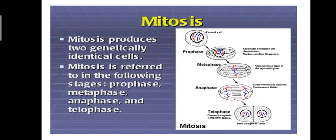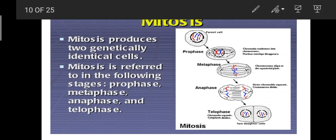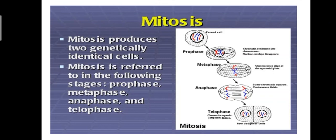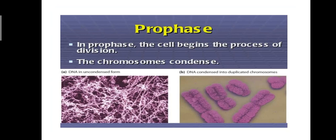In the following stages, the cell begins the process of division. The chromosome contains DNA in uncondensed form here in this diagram and DNA condensed into duplicated chromosomes.